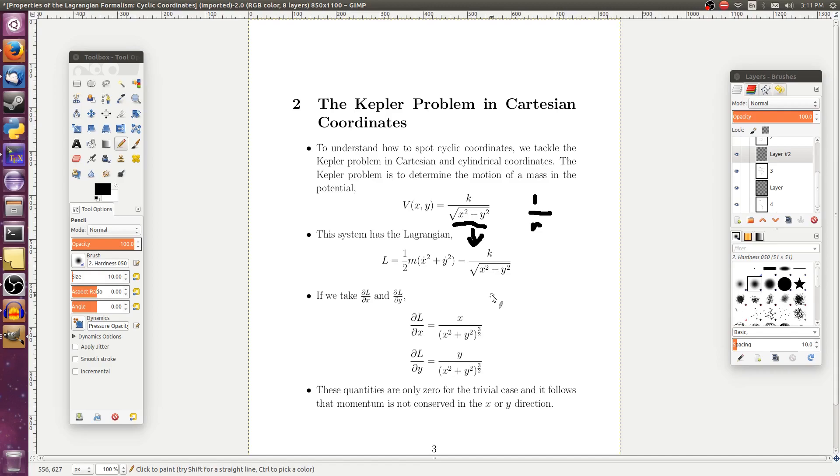So the condition on the conservation theorem was that ∂L/∂q has to be zero. But what's q? Well, it's any one of those generalized coordinates. So if we take ∂L/∂x and ∂L/∂y, we get something that's not always equal to zero. Since it's not equal to zero, then momentum in the x and y direction is not going to be conserved.